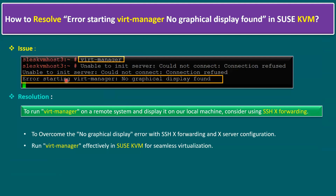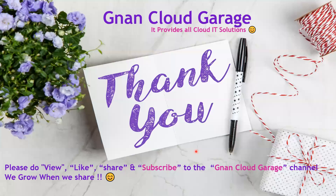In conclusion, to overcome the 'no graphic display' error, SSH X11 forwarding and X server configuration is the solution. This allows us to run Virtual Machine Manager effectively in SUSE Kernel Virtual Machine for seamless virtualization. If you're watching this video for the first time, please like, share, and subscribe to the Gnan Cloud Garage channel.